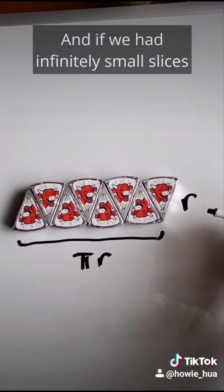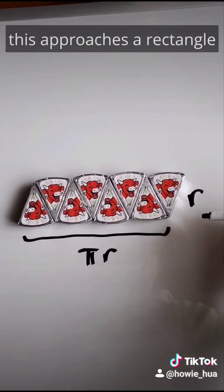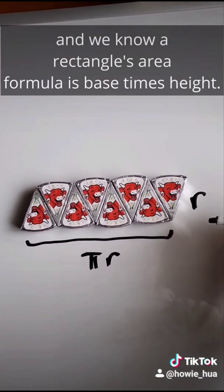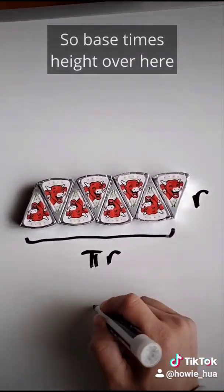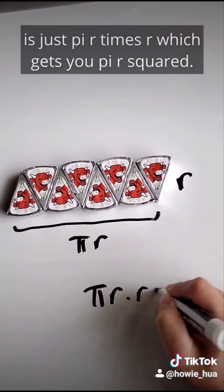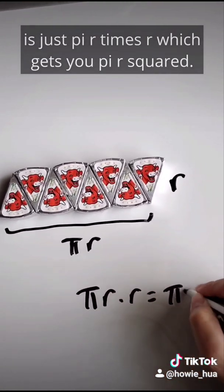And if we add infinitely small slices, this approaches a rectangle. And we know a rectangle's area formula is base times height. So base times height over here is just pi r times r, which gets you pi r squared.